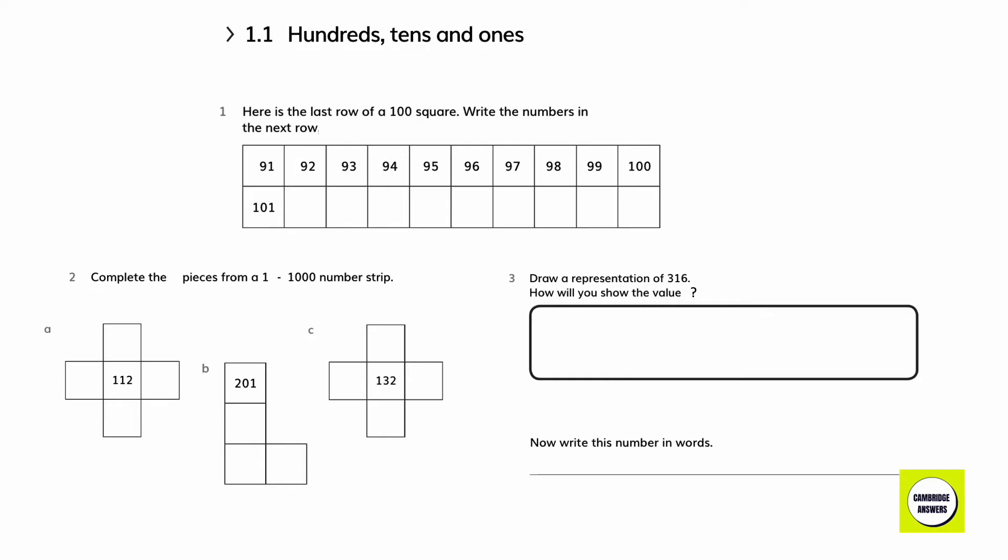Exercise 1.1, Hundreds, tens and ones. Here is the last row of a hundredth square. Write the numbers in the next row, which is the first row of the 101 to 200 square. We know that when we want to move down, we add 10. To get the answer, you could either add 1 in 101 to get 102, or you could add 10 in 92 to get the same answer.